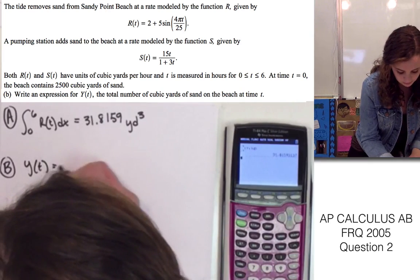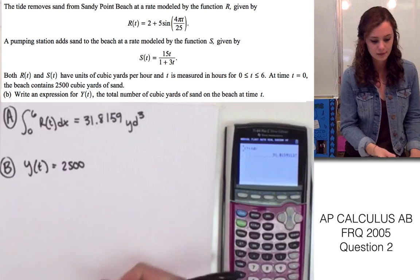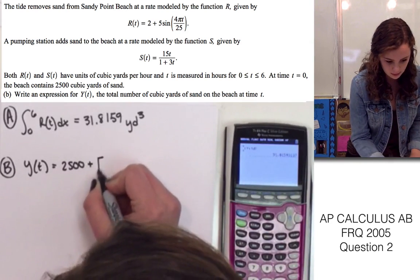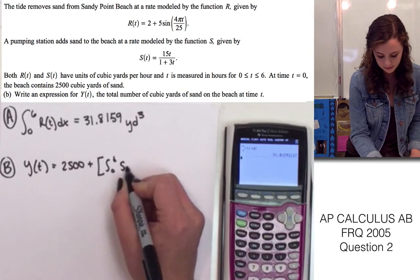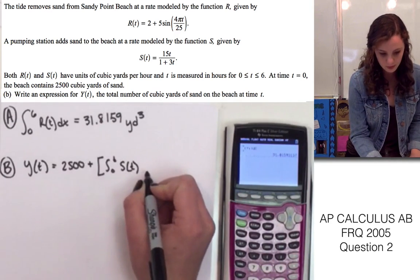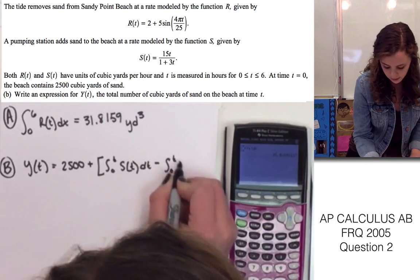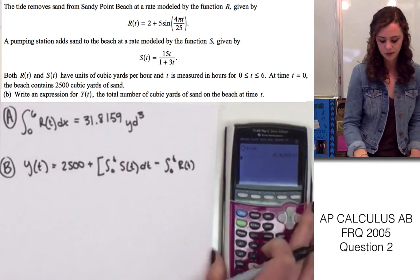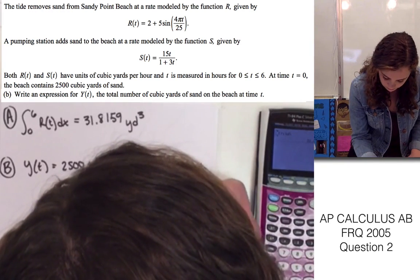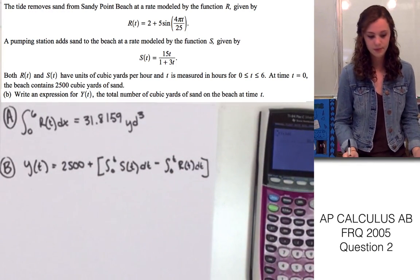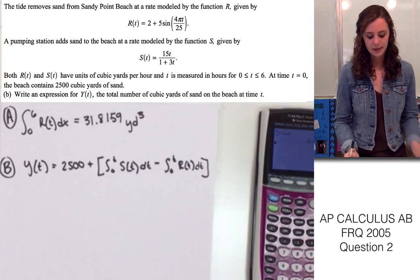Y of t is going to equal 2,500, since at t equals 0, there's already 2,500 yards. Plus, we're going to have to take the integral of s of t, since that's what is being pumped into the beach, minus integral of r of t, since that's what is being removed, so we have to subtract that from the total. That expresses the total number of cubic yards of sand at the beach at time t.